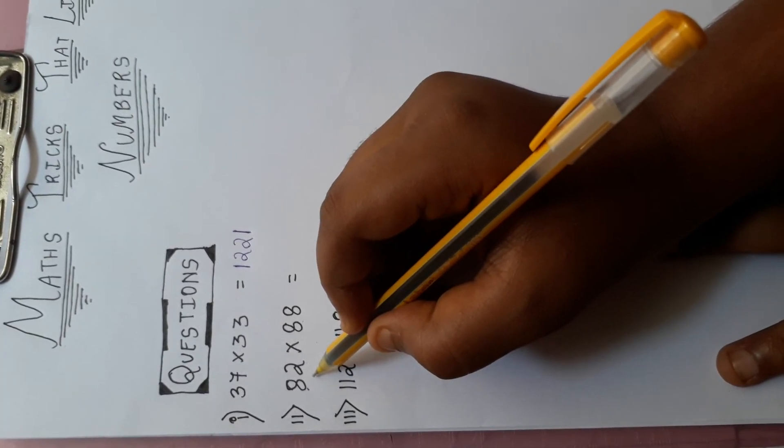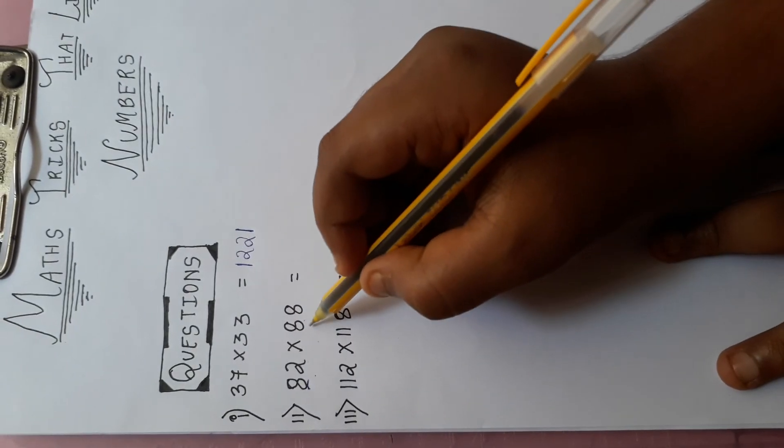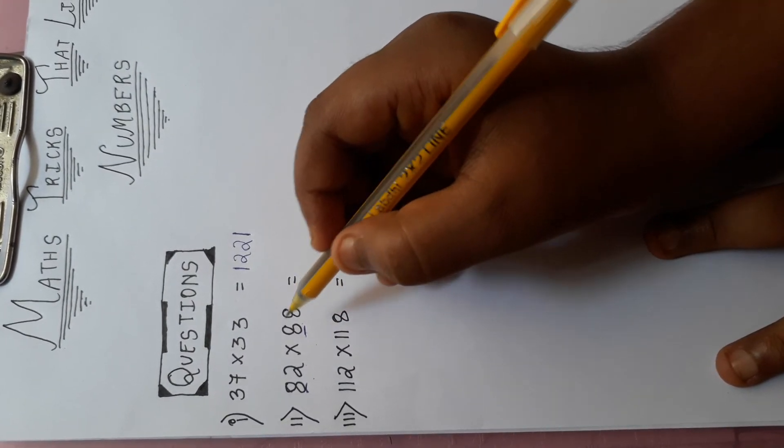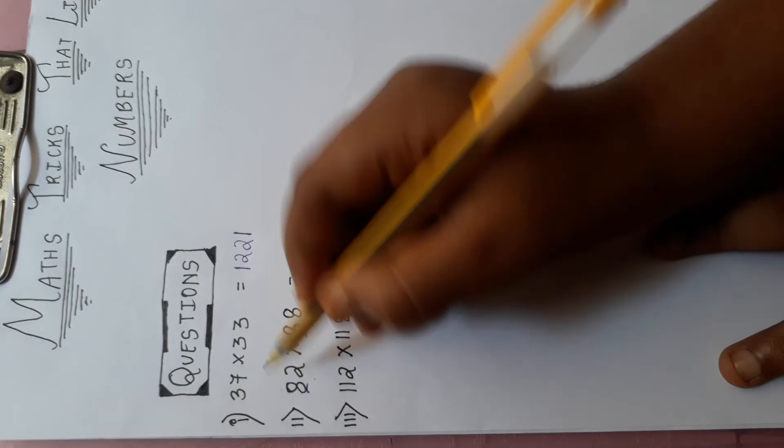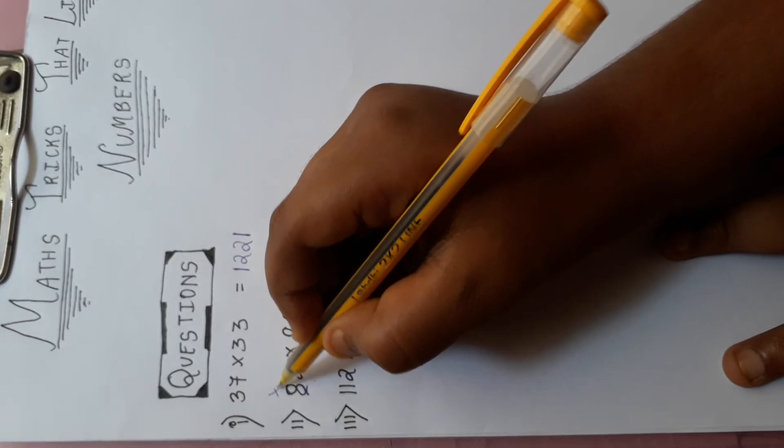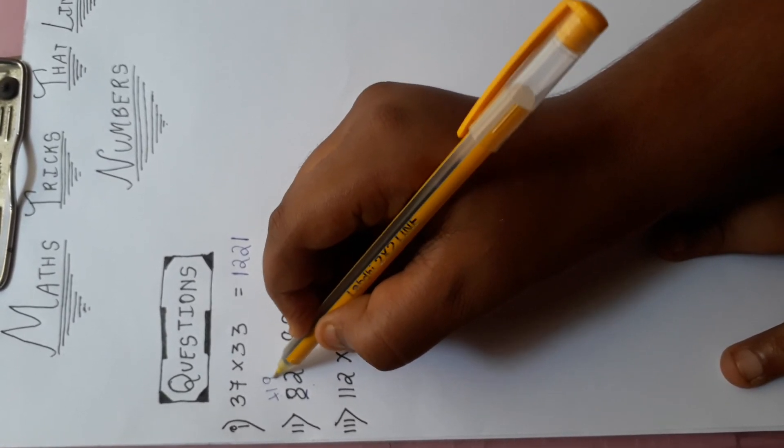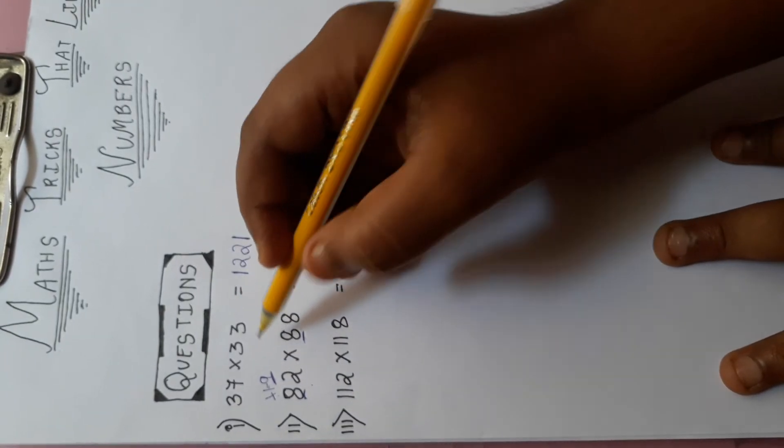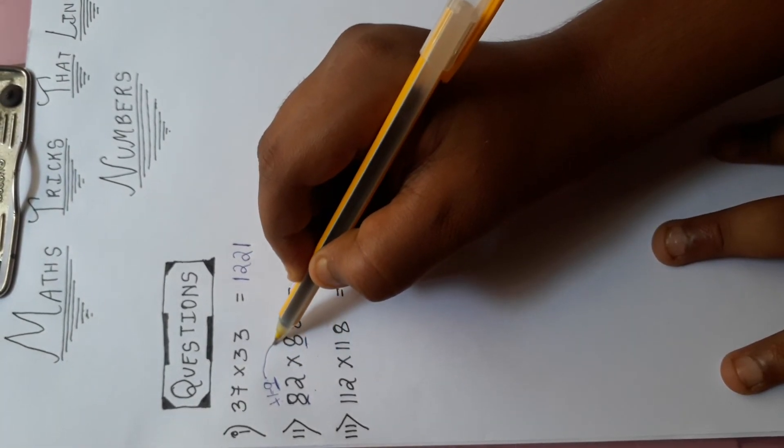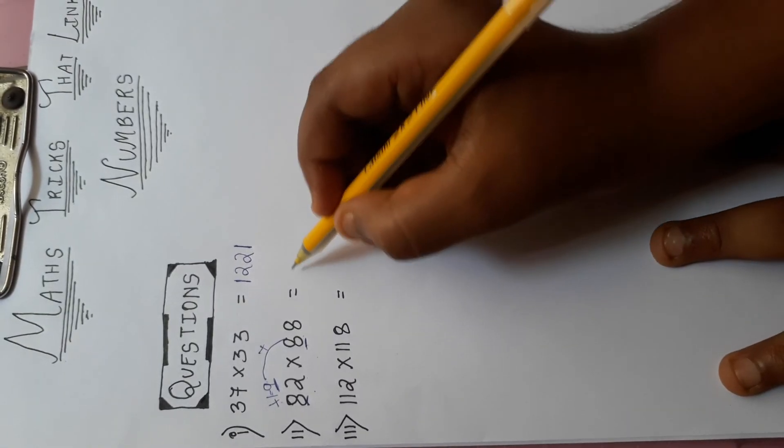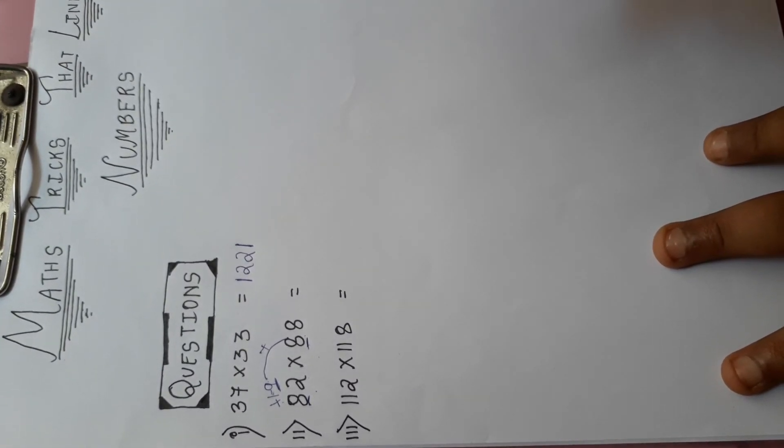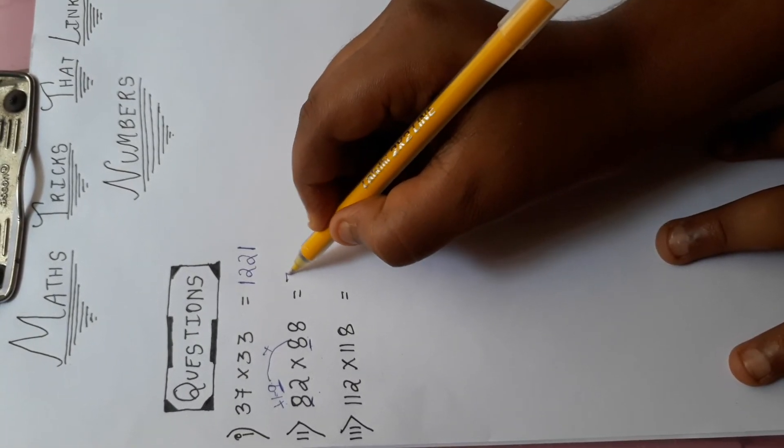First digit from your left hand side, LHS, first digit 8 is there. So do plus 1. It will become 9. Now multiply this 9 into 8. So what it will become? 8 nines are 72.